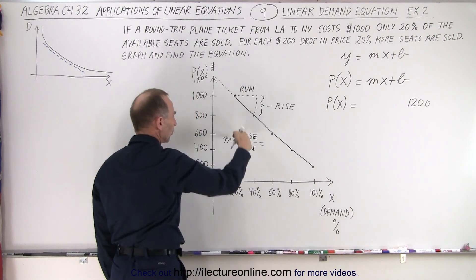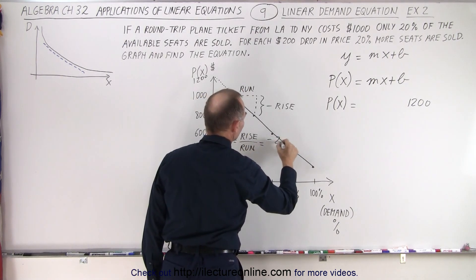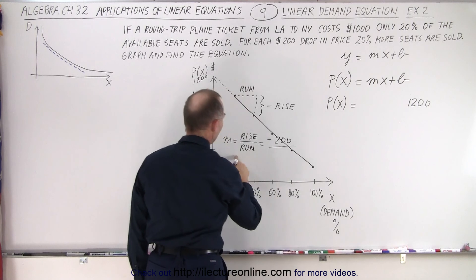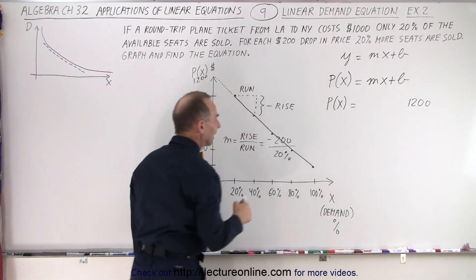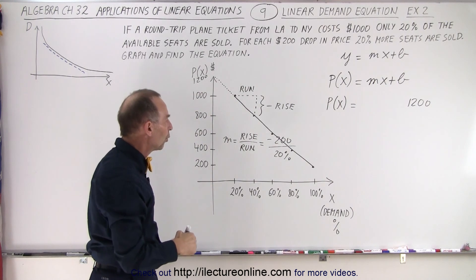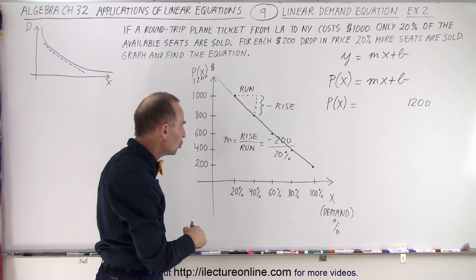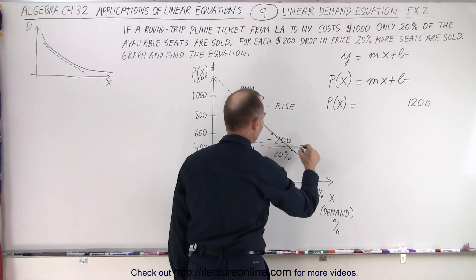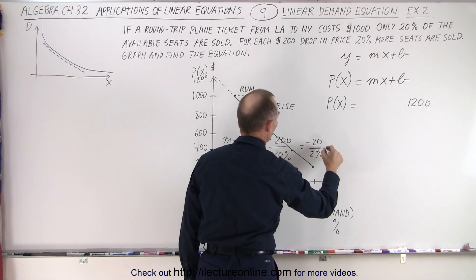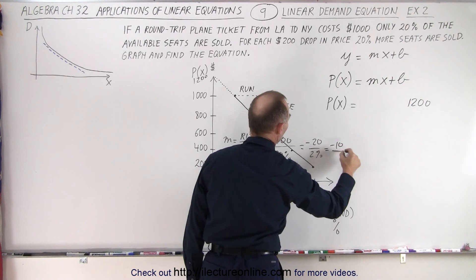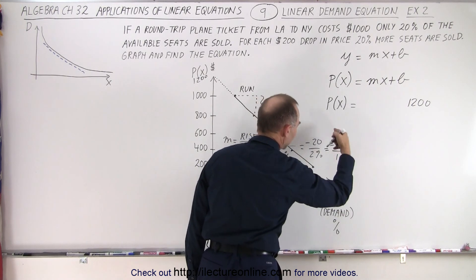The rise will be negative. And how far do we drop? We drop a negative $200. And we have a run of 20%. So it's $200, negative 200 over 20%, or negative 20 over 2. We can simplify that. We can go negative 20 over 2%, or negative 10 over 1%. So that's kind of the ratio.